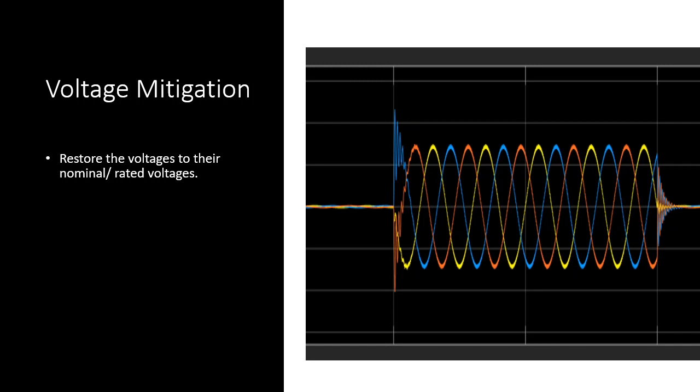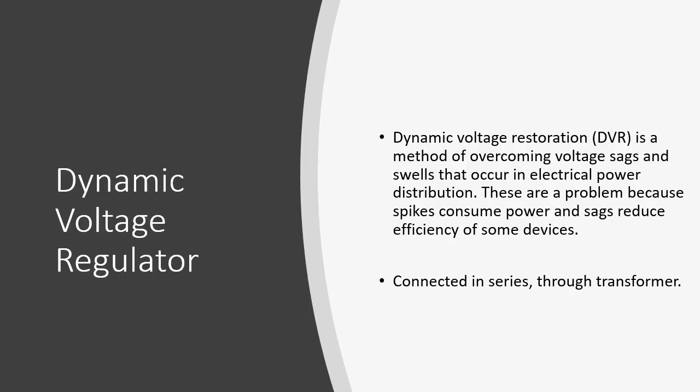For instance, my laptop charger operates at 230 volts with plus or minus 5% — meaning it can operate between roughly 218.5 volts and 241.5 volts. That's the nominal operational voltage range. The same applies to all electrical devices at home or in the office. In the case of voltage sag, the voltage drops outside that allowed band, affecting safe operation — and the same applies to voltage swell. That's why we must restore voltages to nominal rated values.